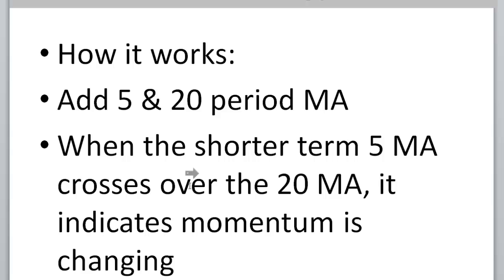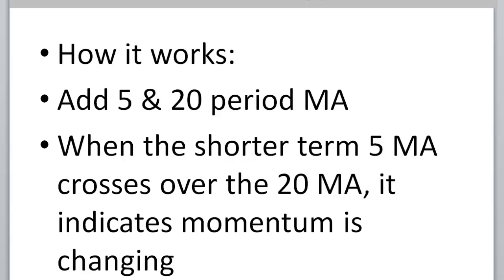So what's the secret recipe of this trading strategy? In addition to our RSI, we want to add a 5 and a 20 period moving average. The 5 period moving average is the shorter term one, and the 20 period one is the longer term one. When the shorter term 5 period moving average crosses above the 20 period moving average, that indicates that the momentum is changing. So we're going to be looking to buy things that are oversold, but only when the momentum is coming back into our favor.